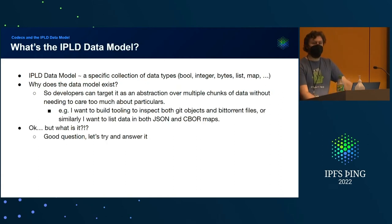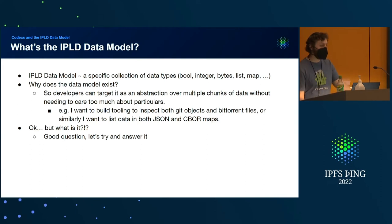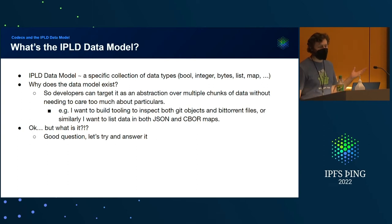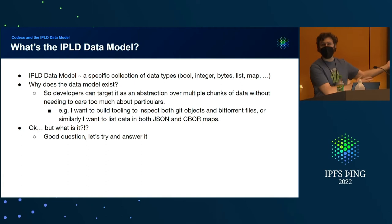What's the IPLD data model? It's a collection of specific data types such as integer, bytes, list, map. It exists so that developers can target it as an abstraction layer without having to care too much about the particulars. I want to look at Git or BitTorrent files and list their fields with a uniform toolset, or look at both JSON and CBOR maps with unified tooling. You could argue about whether it should support more or fewer types — maybe quaternions should be in there, but right now it doesn't.